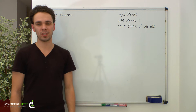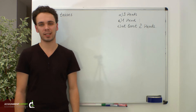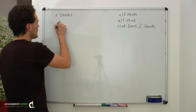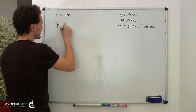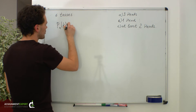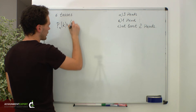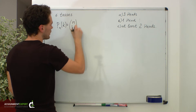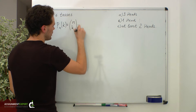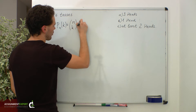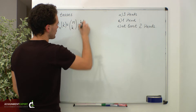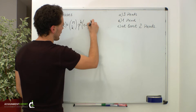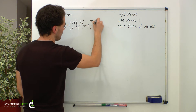The probability formula in this case looks like this. The probability of k successes out of n trials equals the binomial coefficient n choose k, times p raised to the power k, times one minus p raised to the power n minus k.